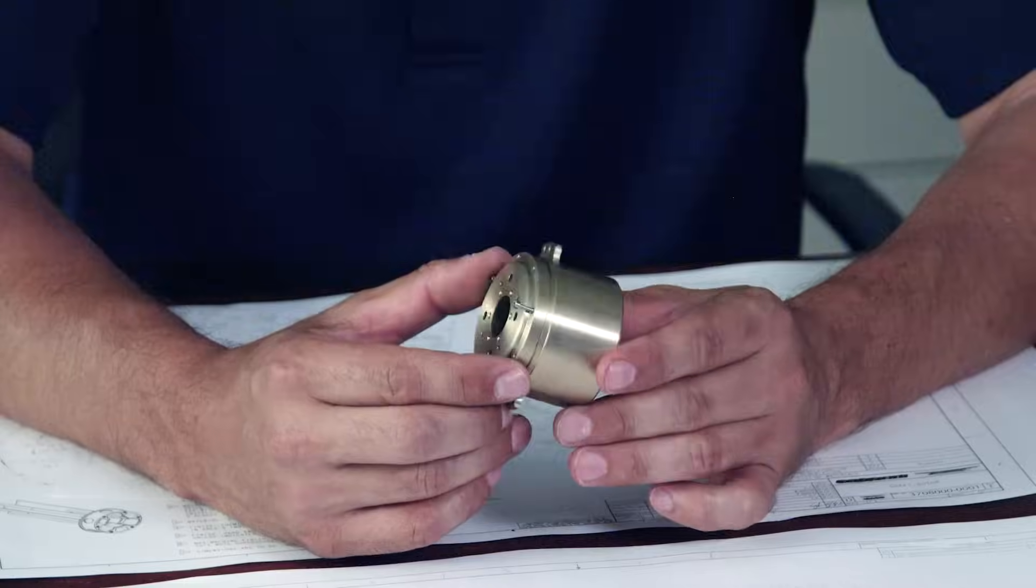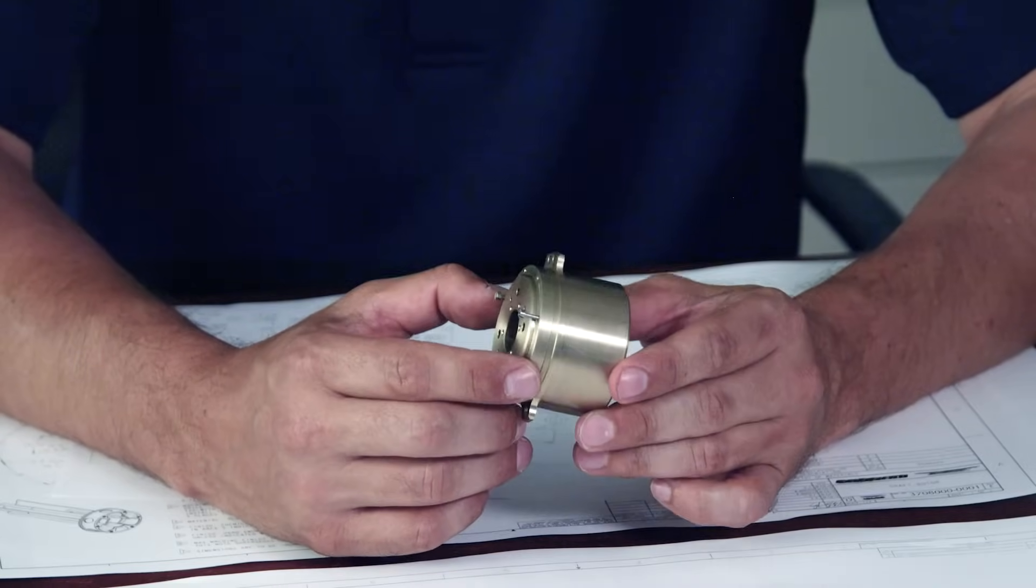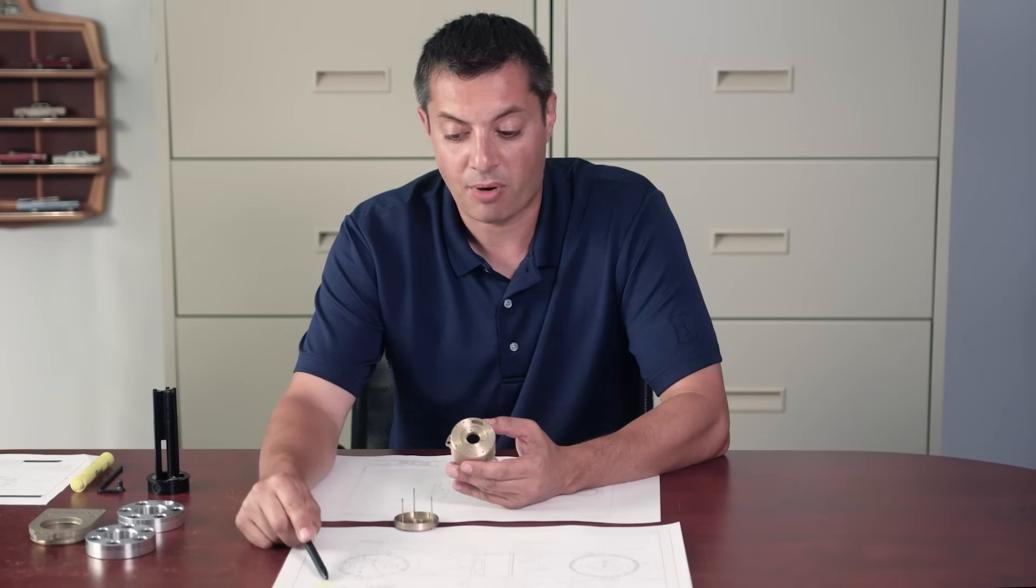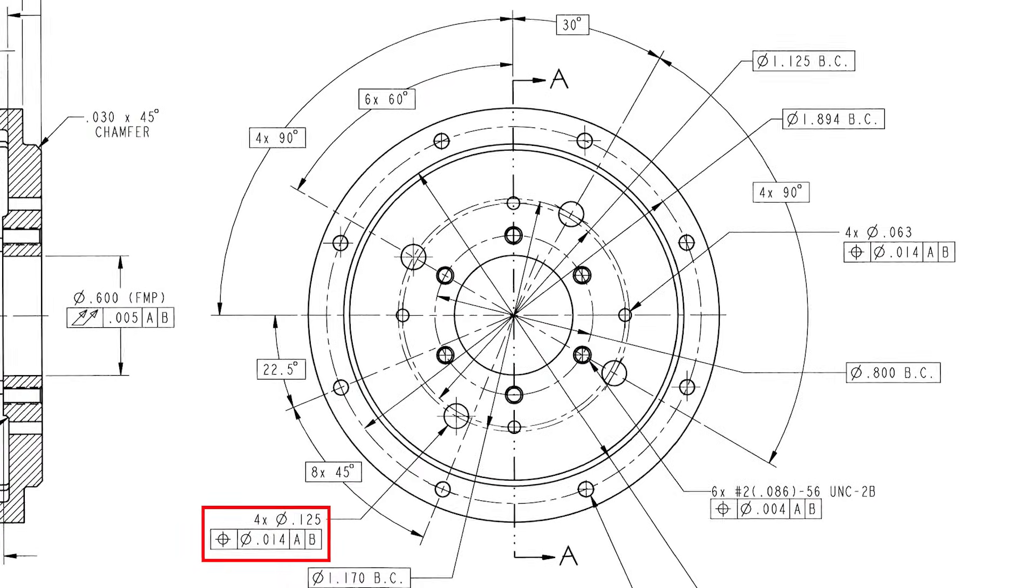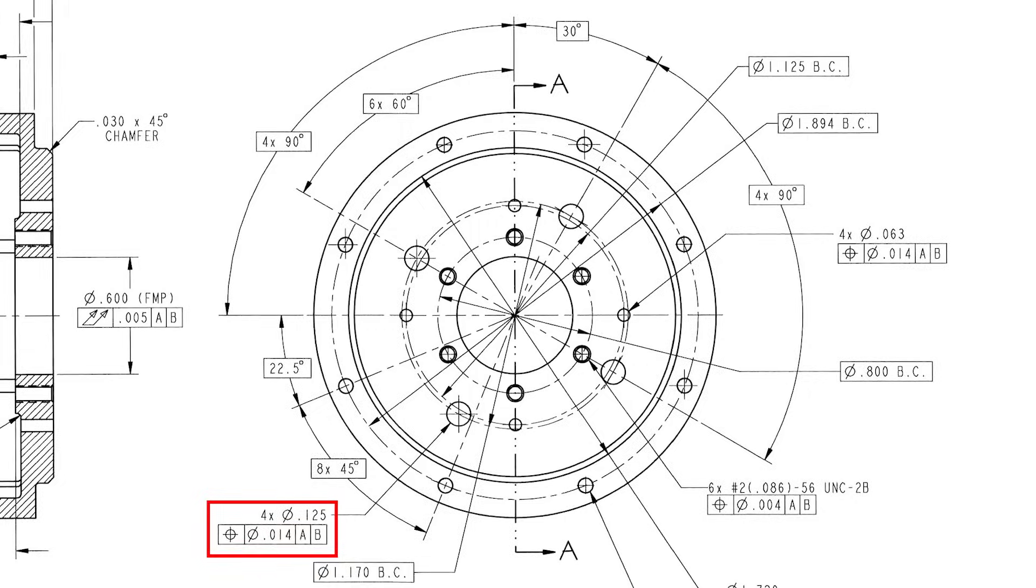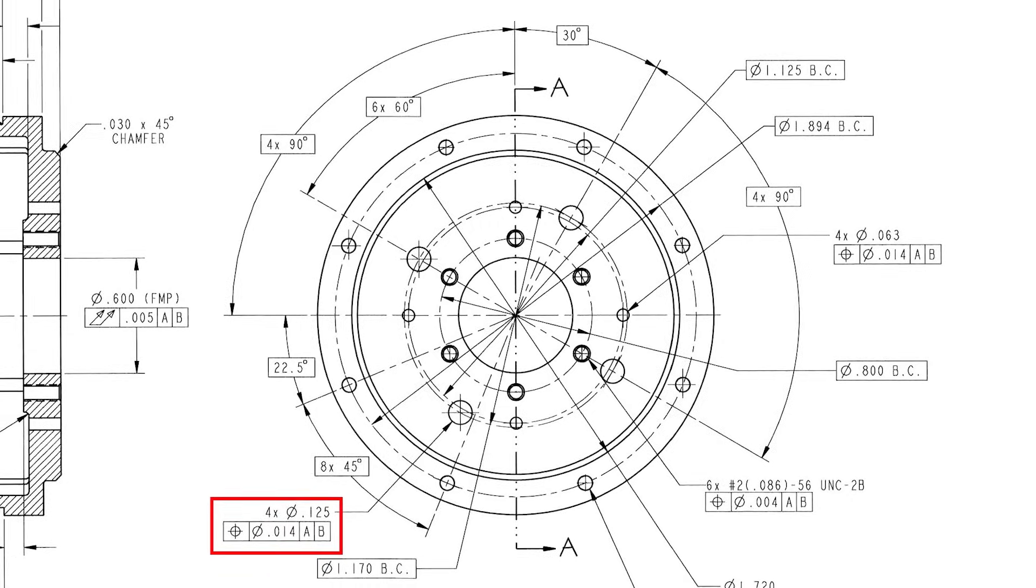So by giving a tolerance and using GD&T for positioning, they're ensuring that their mating part would have a tolerance less than the 14 thousandths given on this drawing. As long as our hole-to-hole relationship is within the geometric tolerance, the parts will work.